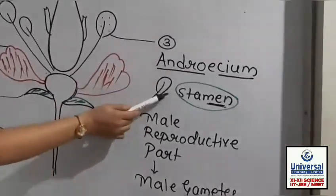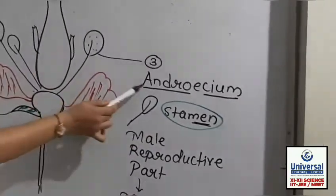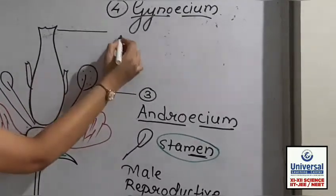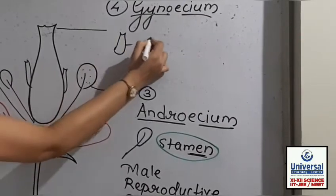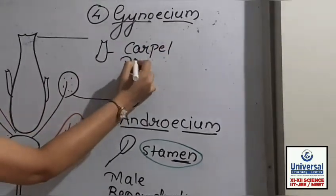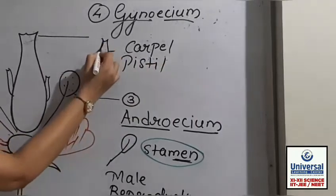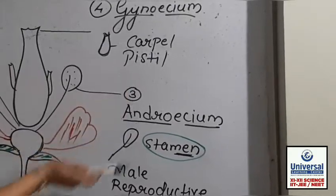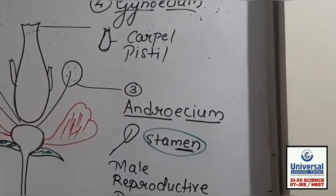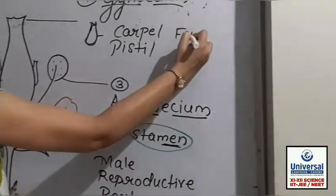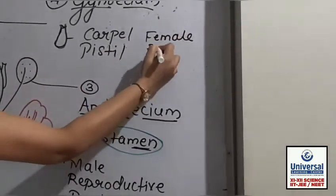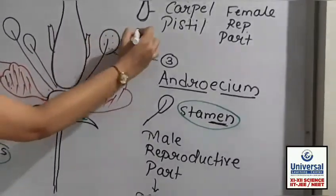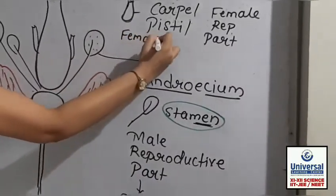Just as the single unit in androecium is stamen and the whole wall is androecium, similarly the single unit here is called carpel or pistil, and the whole wall is gynoecium. Since androecium is the male reproductive part, gynoecium is the female reproductive part, and it produces female gametes.